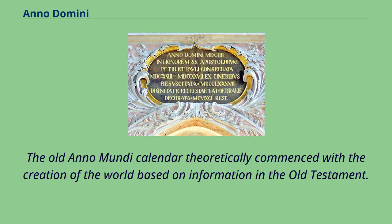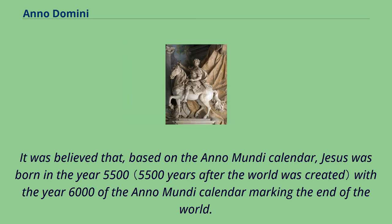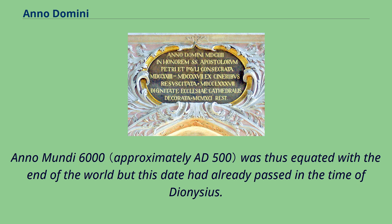The old Anno Mundi calendar theoretically commenced with the creation of the world based on information in the Old Testament. It was believed that, based on the Anno Mundi calendar, Jesus was born in the year 5500, with the year 6000 of the Anno Mundi calendar marking the end of the world. Anno Mundi 6000 was thus equated with the end of the world, but this date had already passed in the time of Dionysius.